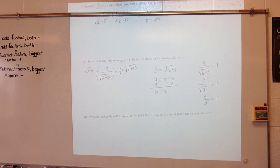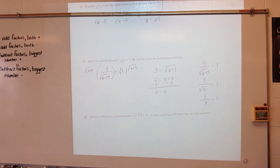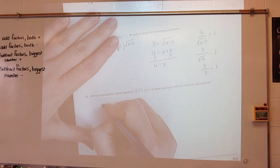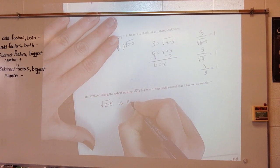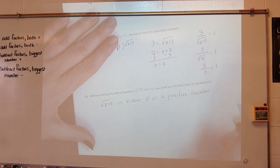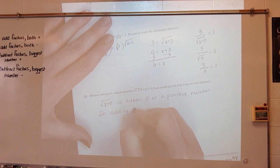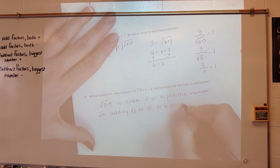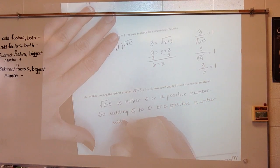Without solving the equation, square root of x plus 5 plus 9 equals 0 — how could you tell it has no real solution? The radical expression, square root of x plus 5, is positive or zero. In either case, adding 9 will not give me 0. The square root of x plus 5 is either 0 or a positive number, so adding 9 to 0 or a positive number will never give 0.